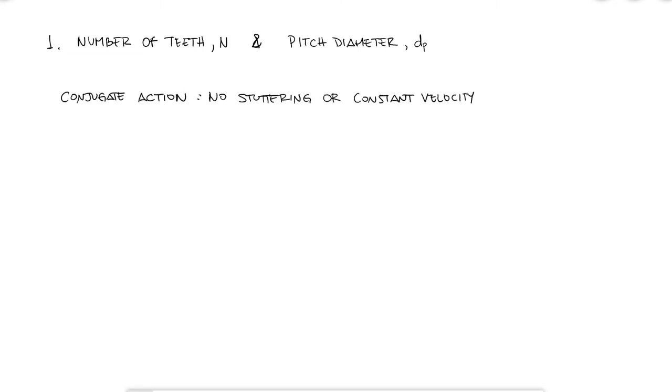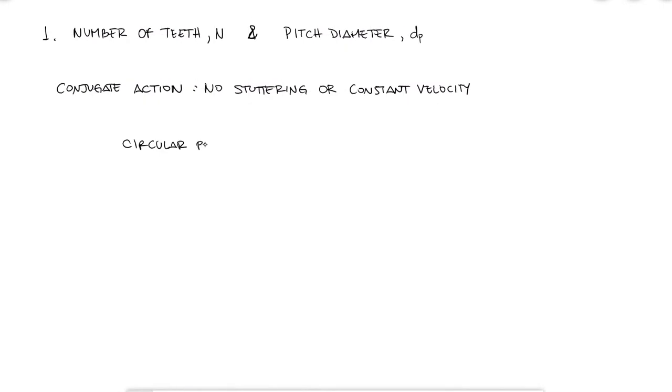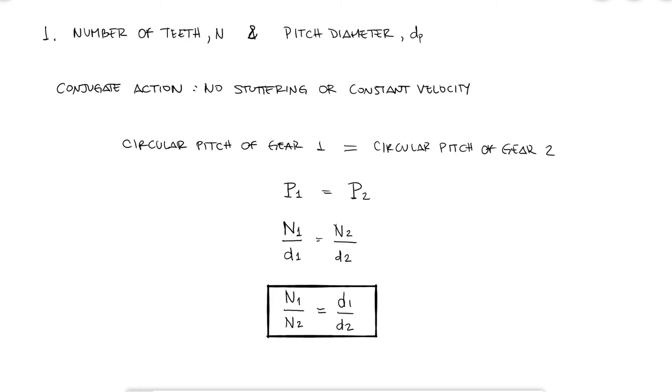For the gears to mate properly, the circular pitch, that distance between one tooth and the next has to be the same for both gears, otherwise that teeth distance would not match. Knowing that the module, diametral pitch, and circular pitch are all equivalent, let's use the diametral pitch to say that P1 has to be equal to P2 for proper mating. If this is true, then the ratio between number of teeth has to be equal to the ratio between the diameter of the gears, and remember that we will always use the pitch diameter as the standard diameter for gears.